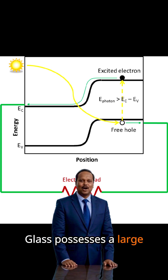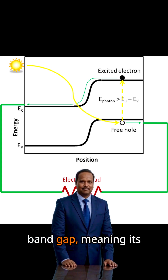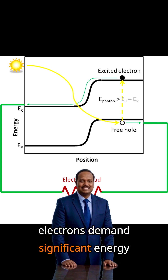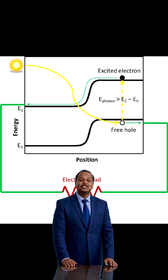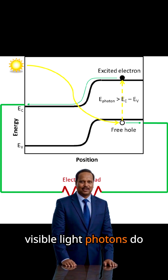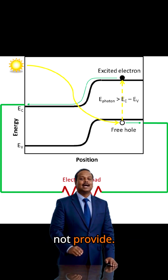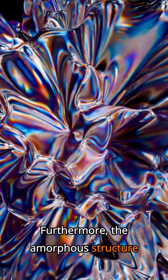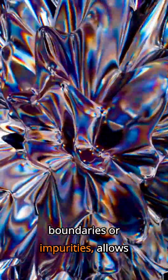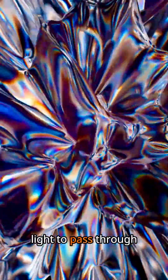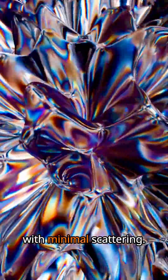Glass possesses a large band gap, meaning its electrons demand significant energy to transition — energy that visible light photons do not provide. Furthermore, the amorphous structure of glass, lacking grain boundaries or impurities, allows light to pass through with minimal scattering.